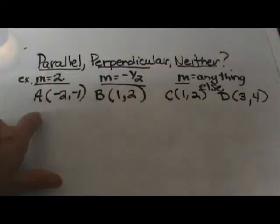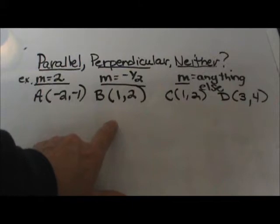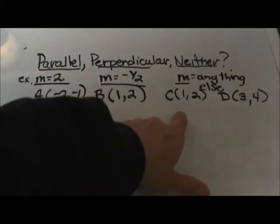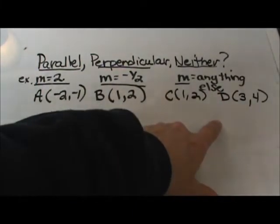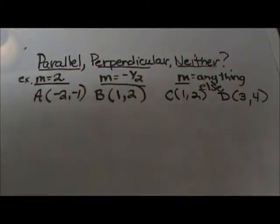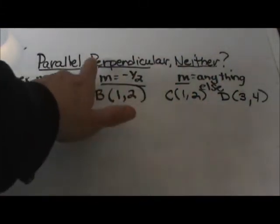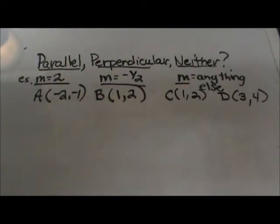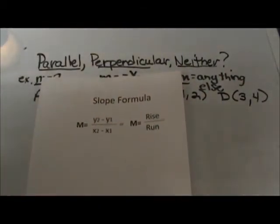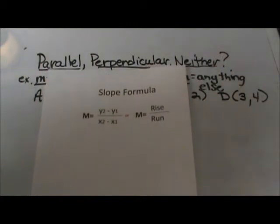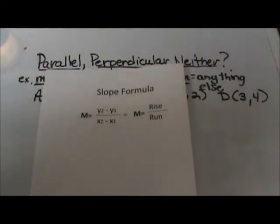So now let's do our own pairs. We are going to take AB, find the slope of that line, and then CD, find the slope of that line, and compare and see if these are the same or neither. So let's start off with the slope formula. The slope formula is y2 minus y1 over x2 minus x1.